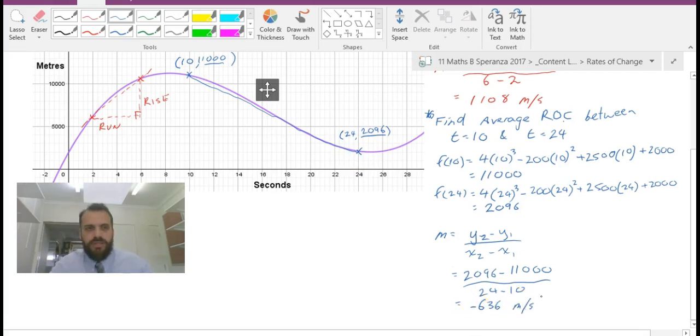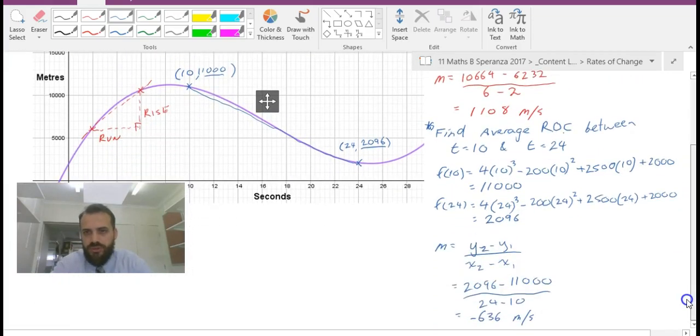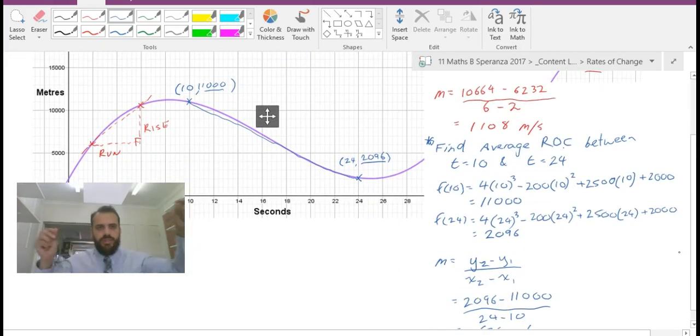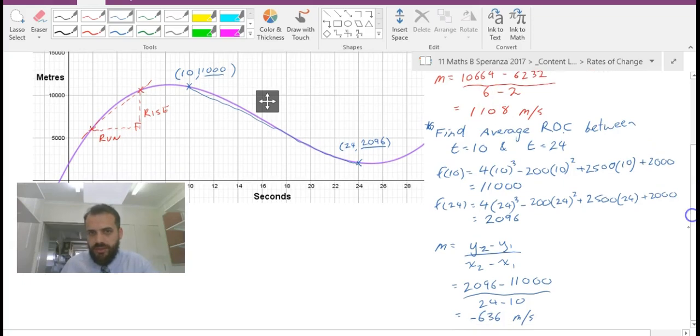So this time the rate of change is falling, that's why I've got a negative rate of change here. So there's average rates of change: pick two points, draw a line between them, and that'll give us our average rate of change.